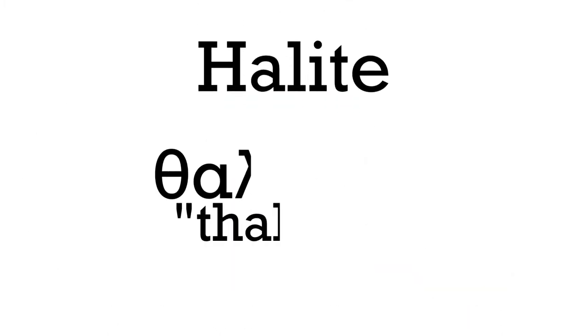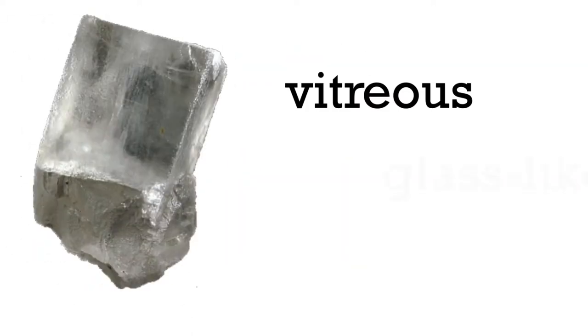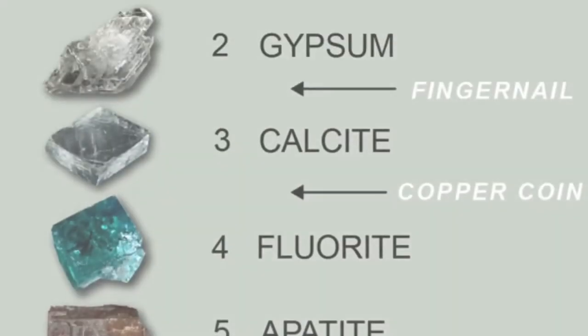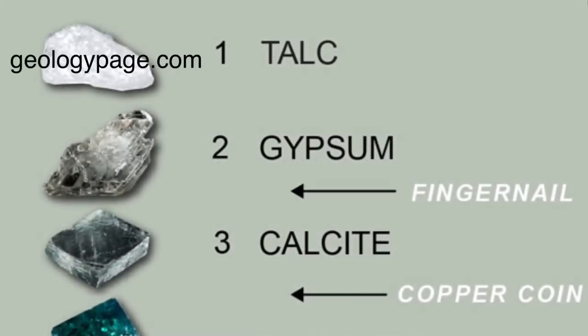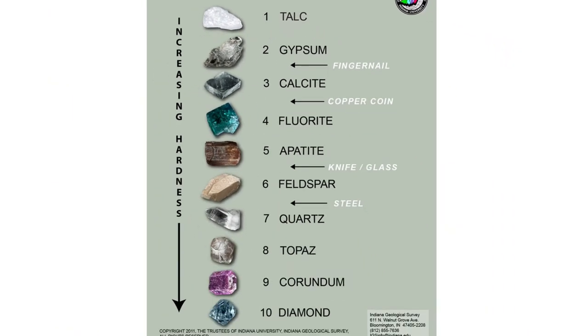It gets its name from the Greek 'thalasa,' which means sea. Halite has a vitreous, glass-like luster and a hardness of around 2.5 on the Mohs hardness scale, which is pretty soft for a rock.